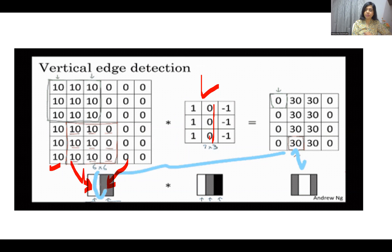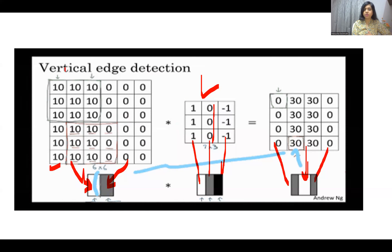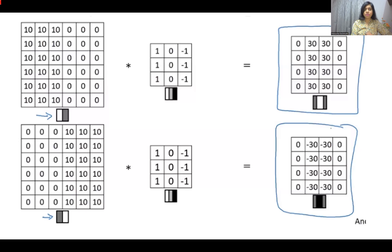When we convolve the image with this filter — where 0 is shown here, minus 1 is represented by black, and 1 is represented by white — after convolution we get a result where the value 30 is represented by white and 0 is on both sides. This is used to detect the edge between the value 10 and 0 regions. When the values are flipped — 0 on the left and 10 on the right — the filter is the same but the output is different.